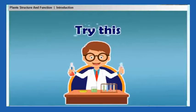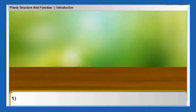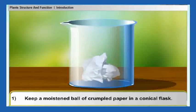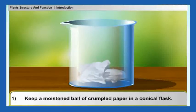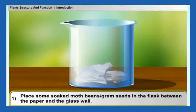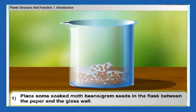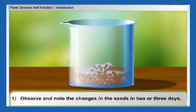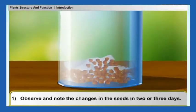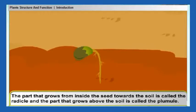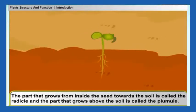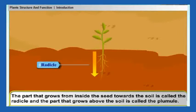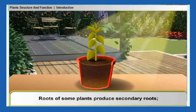Activity one: keep a moist ball of crumpled paper in a conical flask. Place some soaked moat beans, that is gram seeds, in the flask between the paper and the glass wall. Observe and note the changes in the seeds in two or three days. The part that grows from inside the seed towards the soil is called the radicle, and the part that grows above the soil is called the plumule. The root that forms from the radicle grows into the ground.